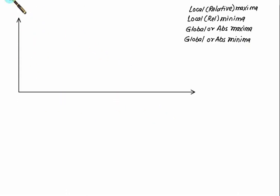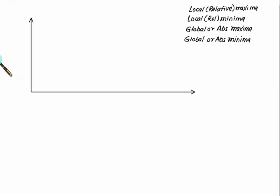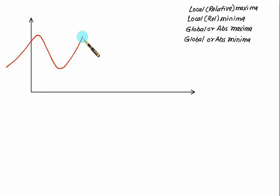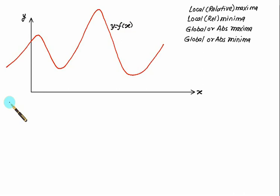Let's say we have a graph of function y = f(x). The graph starts from a point, increases, then decreases, then increases again, decreases, and continues. We have an x-axis and y-axis, and this is the graph of y = f(x). We can see a number of points where the slope is changing.